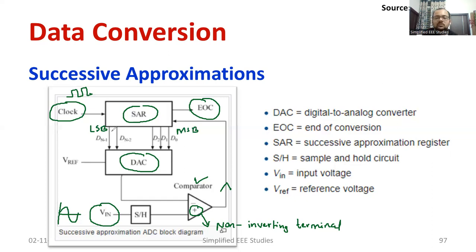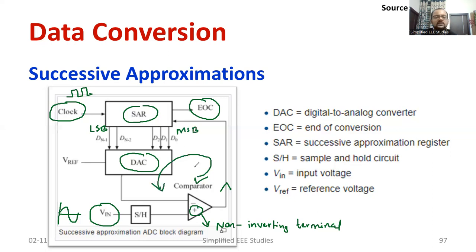The difference of the inverting and non-inverting terminals is converted into digital form. The digital output is then fed to a DAC — digital to analog converter — and the process is repeated in a cyclic fashion. This type of method of converting one form of data into another is known as successive approximation technique.